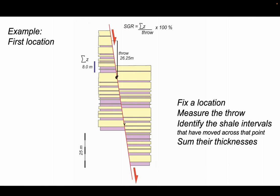The throw in the meantime is 26.25 meters. So we now plug these values into our SGR formula. Just do the maths and it comes out that we have a shale gouge ratio for this particular point on the fault of 30.5%.